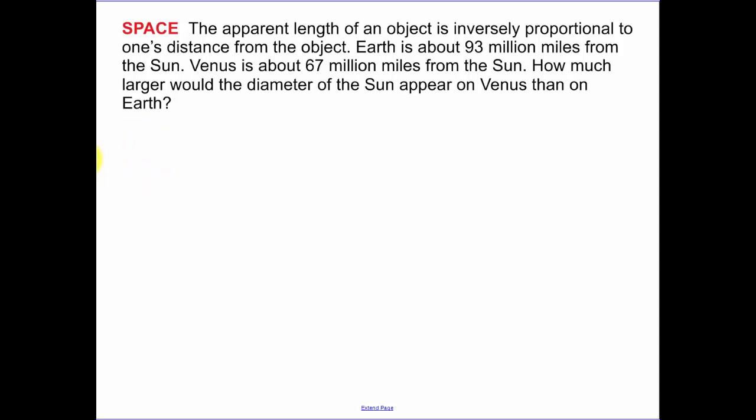So our last example. The apparent length of an object, I'm going to call that L, is inversely proportional to one's distance from the object. So the distance d, I'm going to call that d. The Earth is about 93 million miles from the Sun, and Venus is about 67 million miles from the Sun. Or the length of the object times the distance is going to equal our constant of proportion.